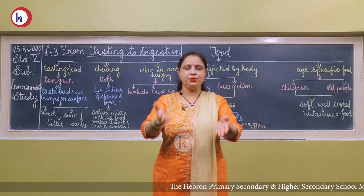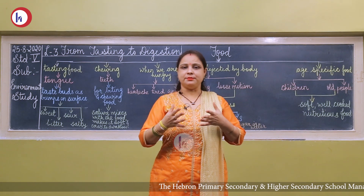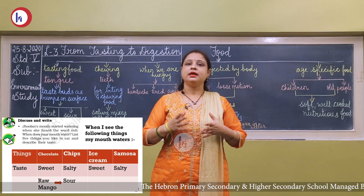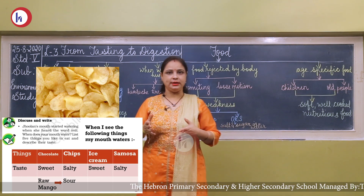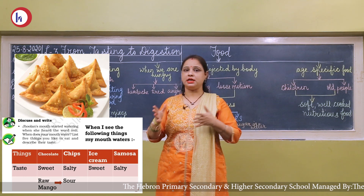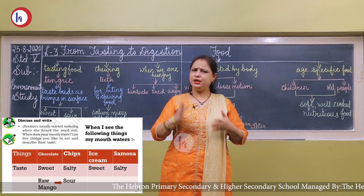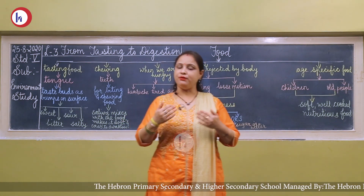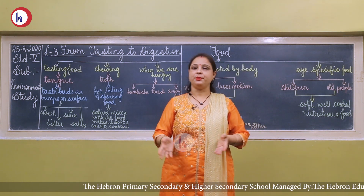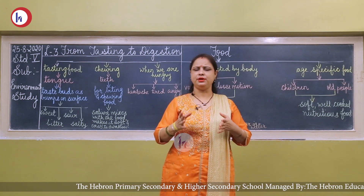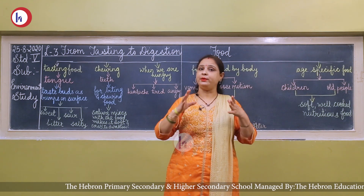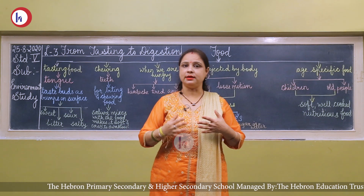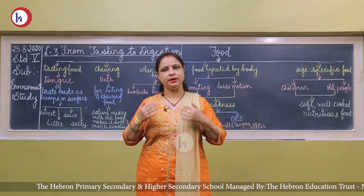Children love to eat food items like chocolate, which is very sweet, chips and wafers, which are very salty, ice cream, samosas, raw mangoes, and so on. Why do we like to eat different kinds of food? Because eating only one kind of food makes us bored, so we like to eat different tastes — sweet, salty, bitter, sour — all kinds of tastes.